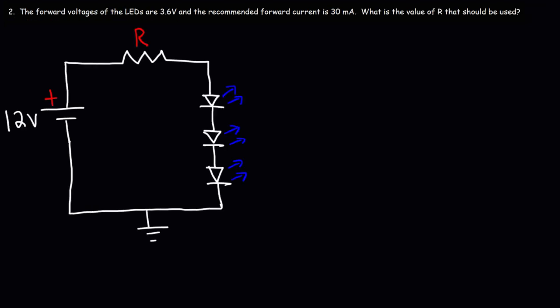For problem two, the forward voltage of each of the LEDs is 3.6 volts and the recommended forward current is 30 milliamps. Determine the value of R that should be used in this circuit. VF is 3.6 volts, IF is 30 milliamps, and we're assuming that all of the LEDs are identical.